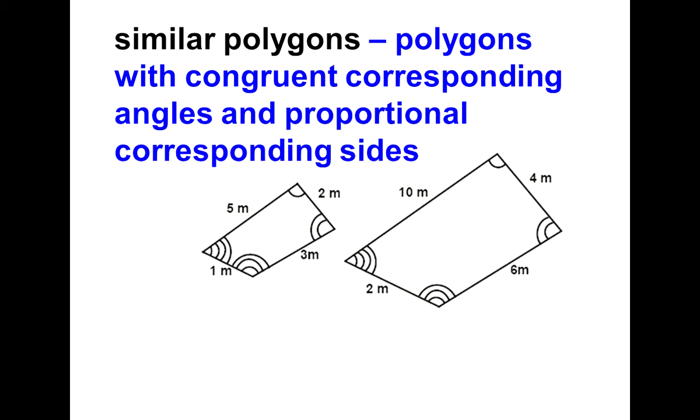Similar polygons have congruent corresponding angles and proportional corresponding sides.